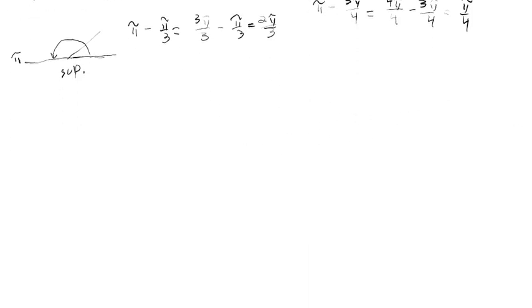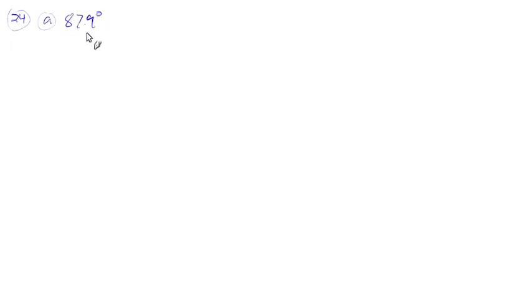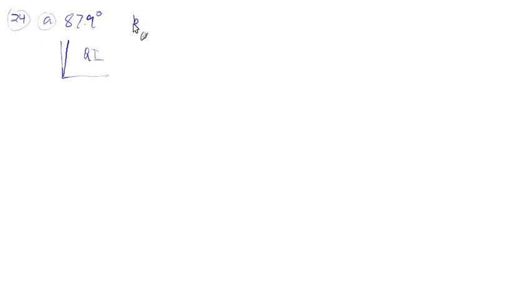Now we do the same things for degrees. Number 24: determine the quadrant. Part A is 87.9°. On the circle, 90° is the boundary, and 87.9° is really close to 90° but not quite there — so we're in Quadrant 1. Part B is 8.5°: we've barely measured anything, just a tiny bit from zero. So still Quadrant 1.